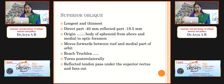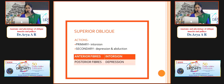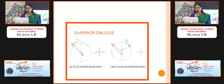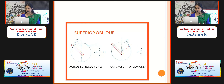Coming to the superior oblique, it is the longest and thinnest muscle. The direct part is about 40 mm and the reflected part is 19.5 mm. It originates from the body of sphenoid, above and medial to the optic foramen. It moves forwards between the roof and medial part of orbit. Once it reaches the trochlea, it turns posterolaterally and gets inserted behind the equator. The reflected tendon passes under the superior rectus muscle and fans out. The primary action is intorsion; secondary is depression and abduction.